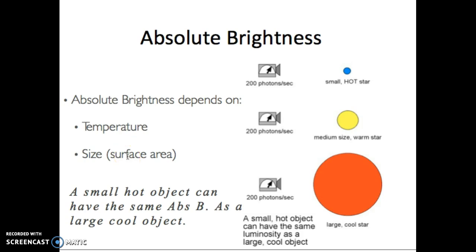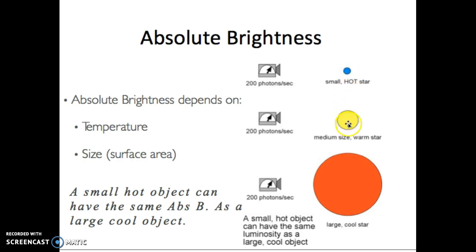To calculate absolute brightness, you need the temperature and the size of the star. A hot object can have the same absolute brightness as a large cold object. Here are three different stars all emitting the same amount of energy per second — they all have the same absolute brightness. In astronomy, blue means hot and red means cold, because blue has a shorter wavelength and greater energy. So a small hot blue star can emit the same energy as a large cold red star.